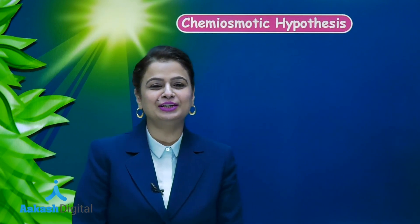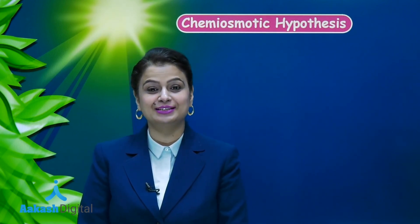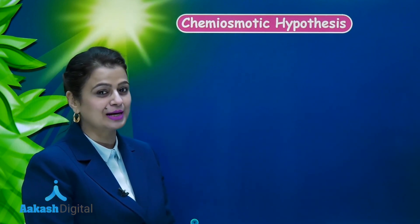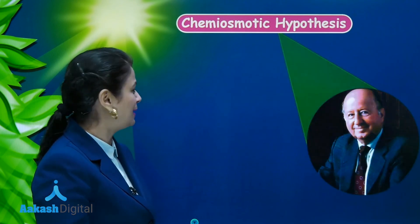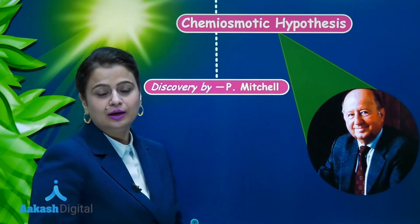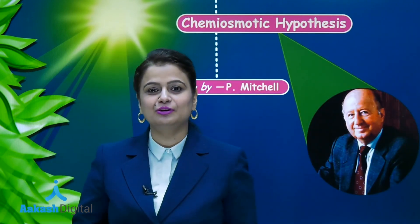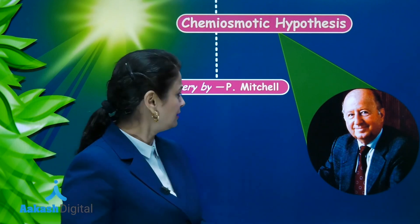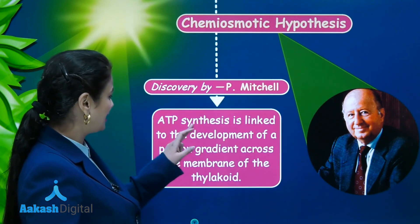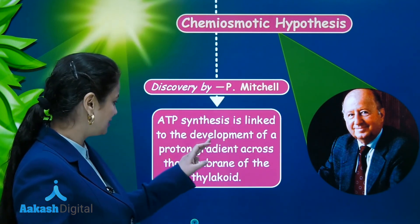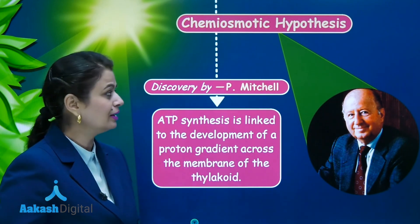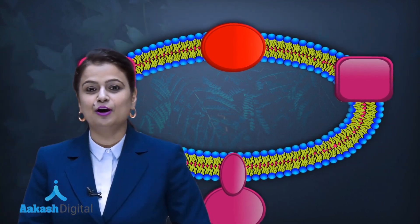Welcome to another lecture on photosynthesis. Today we are going to discuss the chemiosmotic theory for synthesis of ATP in the chloroplast. This theory was given by the scientist Mitchell. The force for synthesis of ATP is the proton gradient. In the chloroplast, formation of ATP is linked to the development of a proton gradient across the thylakoid membrane.